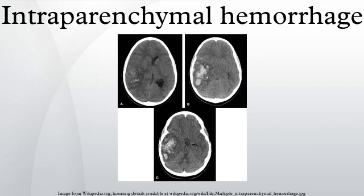Brainstem haemorrhage may present with tetraparesis, facial weakness, decreased level of consciousness, gaze paresis, ocular bobbing, miosis, or autonomic instability.